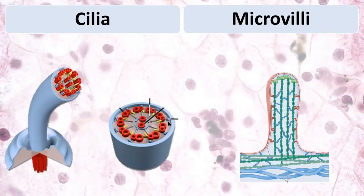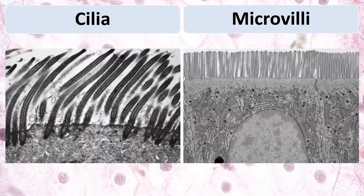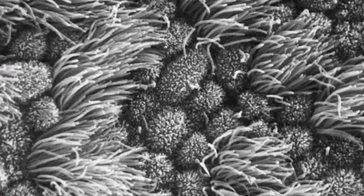Cilia have microtubules inside and microvilli have actin filaments. That's why cilia are movable and can make active movements — for example, cilia can remove dust particles in the respiratory system. Microvilli aren't actively movable, but they can change their shape, and their main function is to increase the apical surface of the cells, which is necessary for absorption of different nutrients. We can compare cilia, which have an axoneme with microtubules, and microvilli, which have only actin filaments.